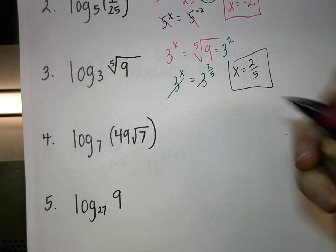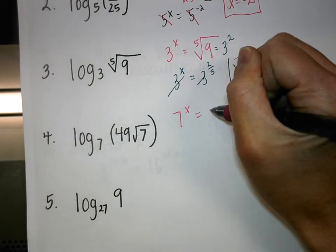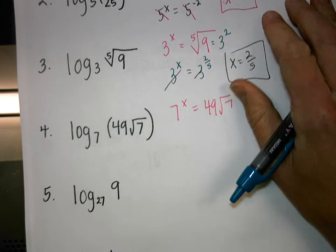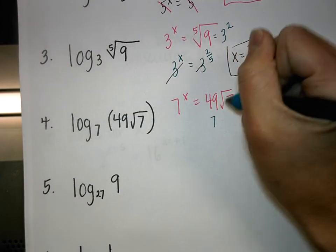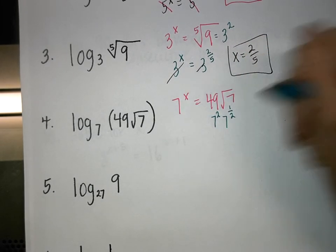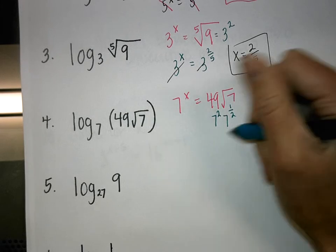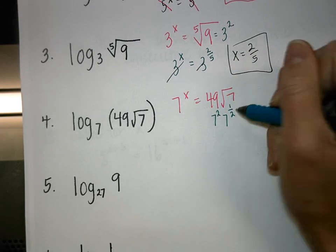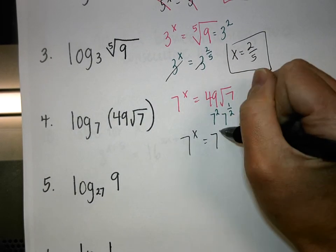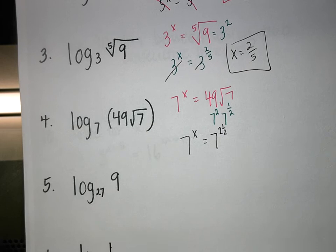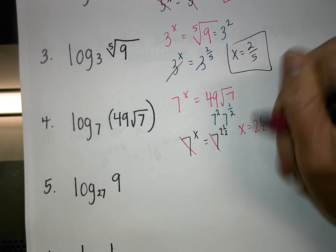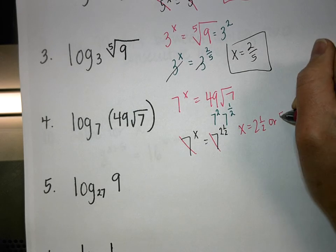Number 4: 7 to what power equals 49 times the root of 7? Change these all to like bases — 49 is 7 to the second power and root 7 is 7 to the 1/2 power. When you have like bases you can add the exponents, and 2 plus 1/2 is 2 and a half, so X equals 2 and a half, or 5 over 2 as an improper fraction.